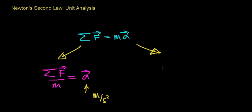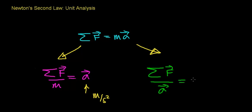In a similar way, you can also divide a unit of force — again, a Newton — divided by a unit of acceleration, which is a meter per second squared, and find a unit of mass, which is expressed in units of kilograms.